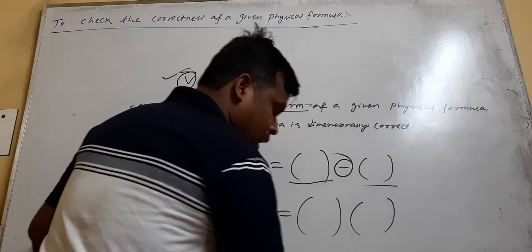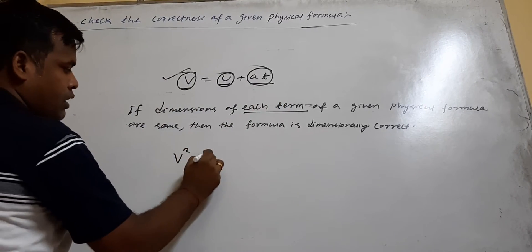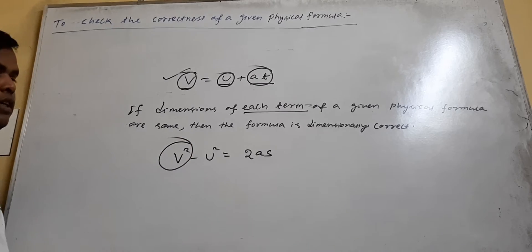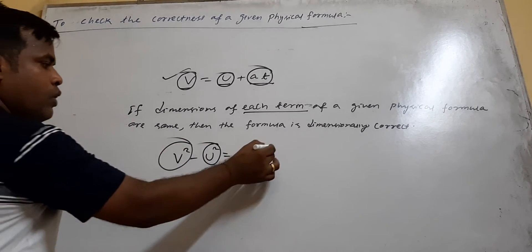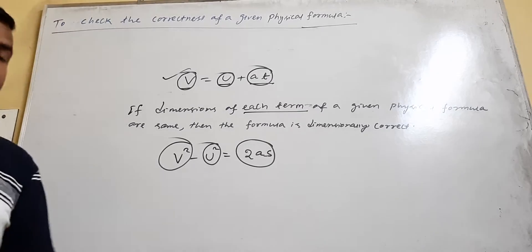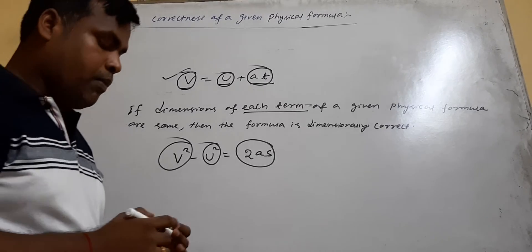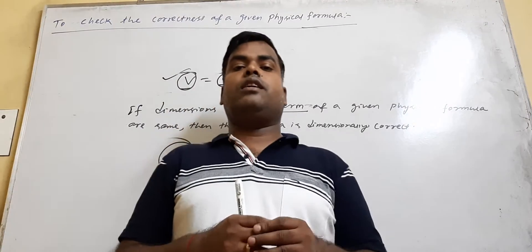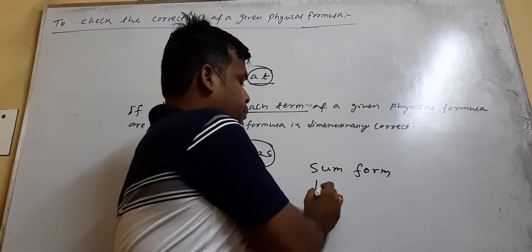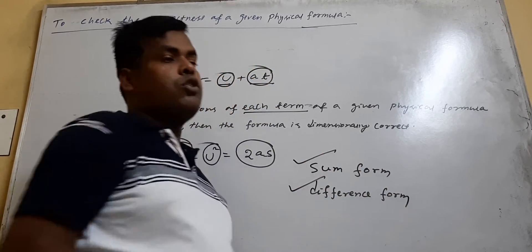Similarly, another example: v squared minus u squared equals 2as. Here, v squared is one term, u squared is another term, and 2as is another term — the whole product is one term. That means the terms of a formula are either in sum form or difference form — addition or subtraction form — not in product form.